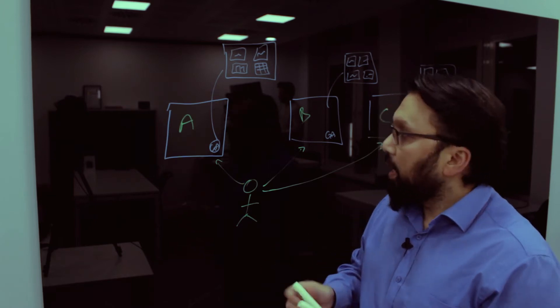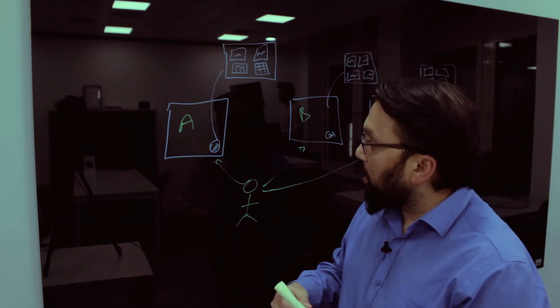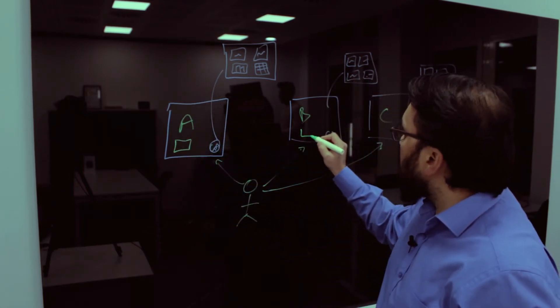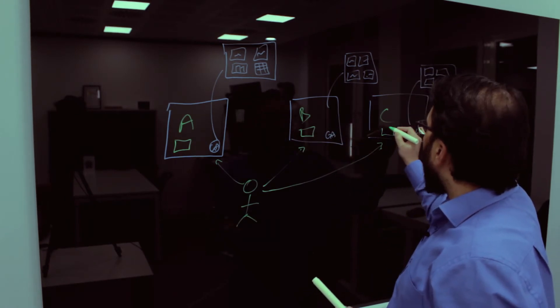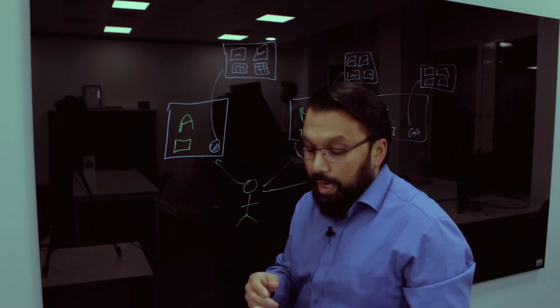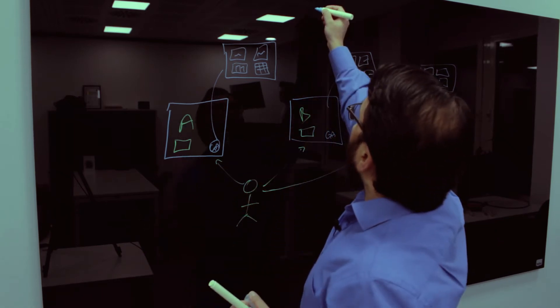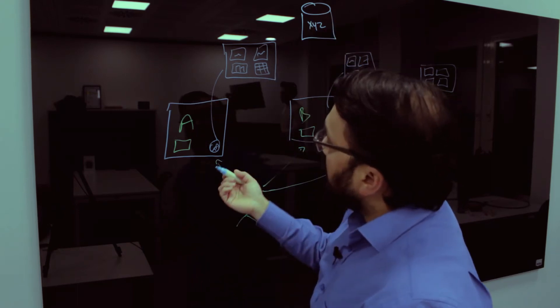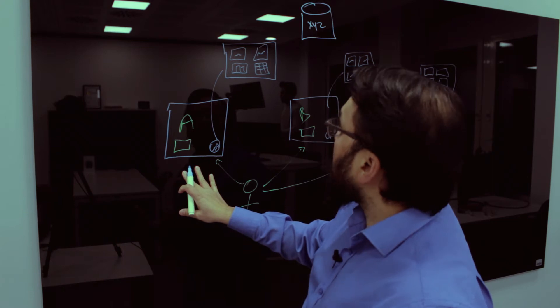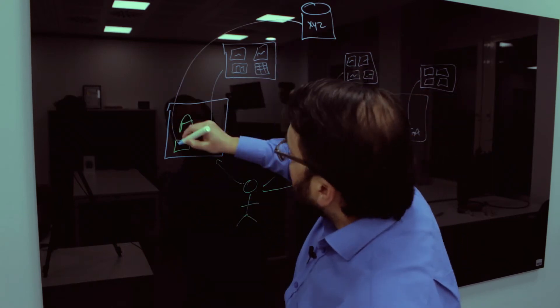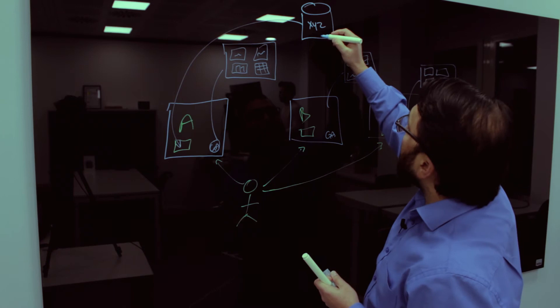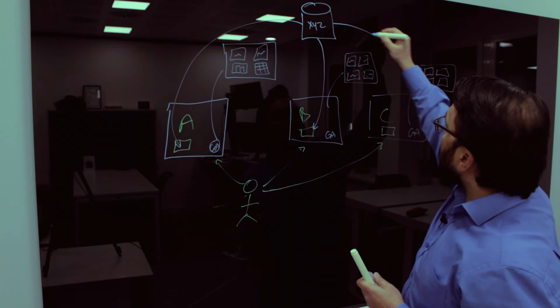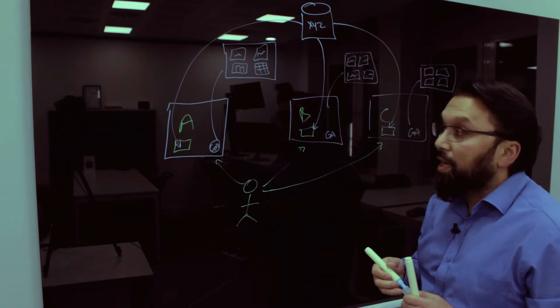Now, if you take something like an ad server, let's say website owner A would like some advertising. So they've got an ad slot here, website B has an ad slot, website C has an ad slot, and they all subscribe or they all use the same ad server. So let's say they all use ad server X, Y, Z. So what will happen is you visit website A, and this ad server sends you an advert. You visit website B, and this ad server sends you an advert. And you visit site C, and this ad server sends you a website.